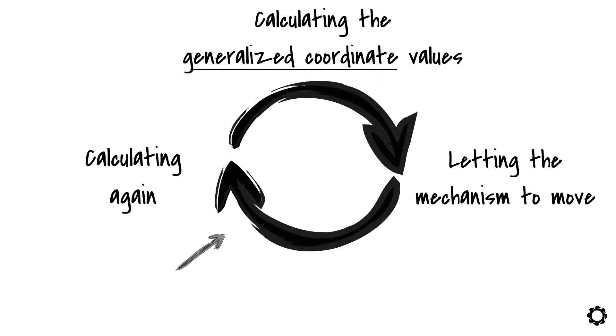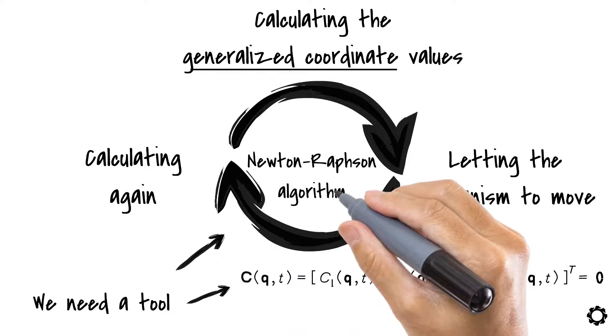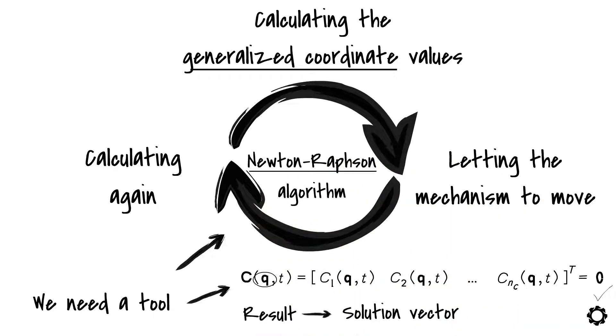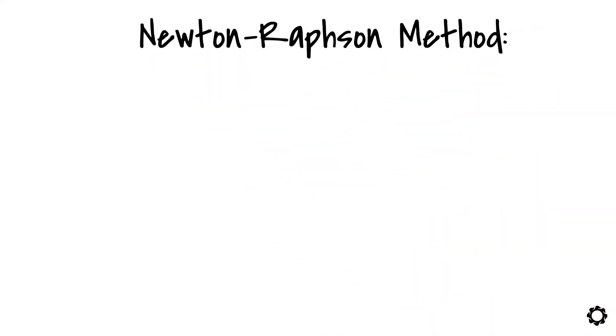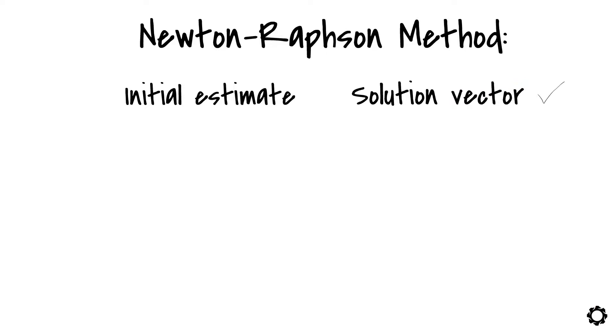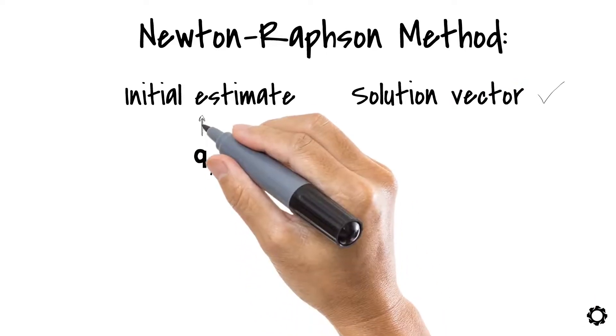For this iterative method, we need a tool to solve this system of non-linear algebraic equations. In our case, we will be using Newton-Raphson algorithm to find the value of the generalized coordinates that satisfy this set of equations. We will refer to the result of the algorithm as the solution vector. The Newton-Raphson method assumes that you have an initial estimate, a guess, of what the solution vector should be.